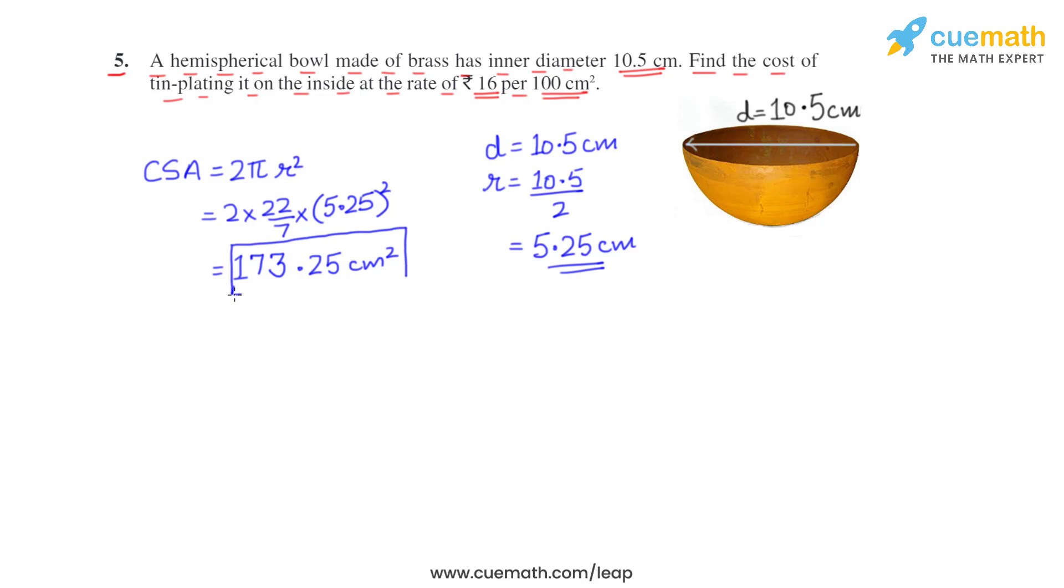Now let's find the cost. The cost of tin plating 100 square centimeters is rupees 16. This means the cost of tin plating 1 square centimeter will be rupees 16 by 100.